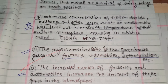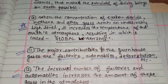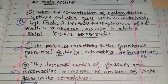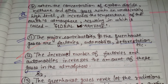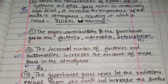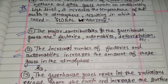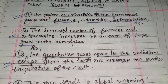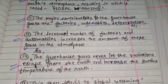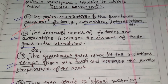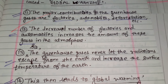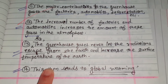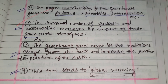The major contributors to the greenhouse gases are factories, automobiles, and deforestation. The increased number of factories and automobiles increases the amount of these gases in the atmosphere. The greenhouse gases never let the radiations escape from the earth and increase the surface temperature, which then leads to global warming.